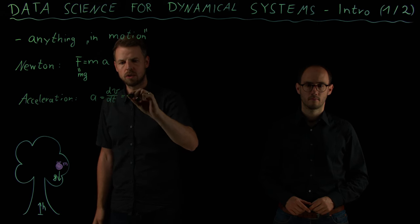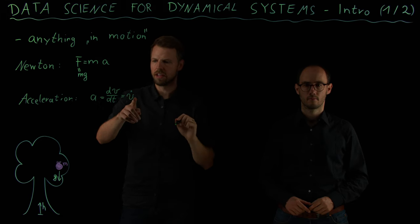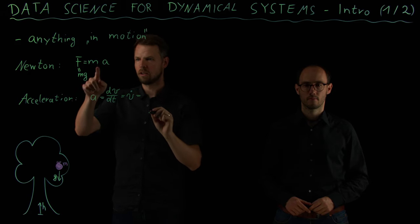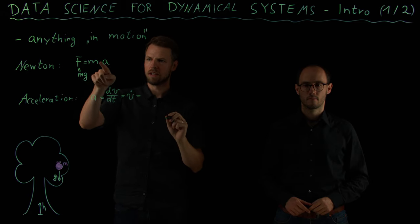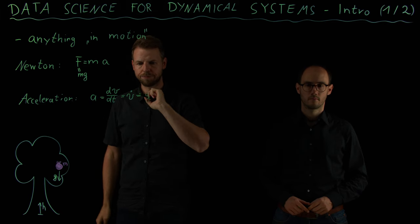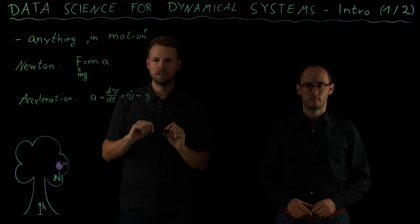Or what we can also use is the very common notation of v dot, which means the time derivative of the velocity. And if we look at this equation, m times g equals m times a means a is our gravitational constant g. So now we have a second quantity, the velocity.